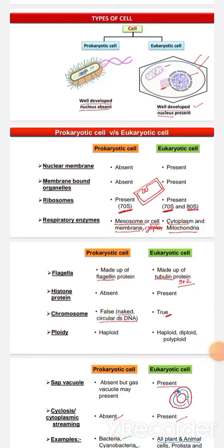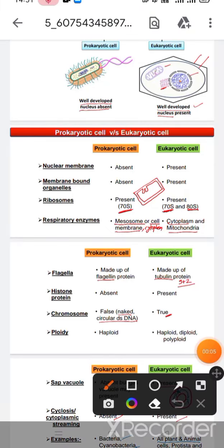Hello friends, we will continue and in this lecture we can start from the cells and the types of cells. Cells are two types: prokaryotic and eukaryotic cells.